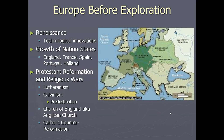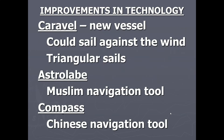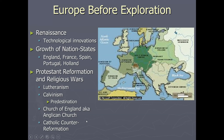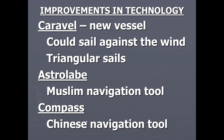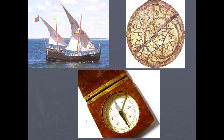Much of this is world history review. The Renaissance introduced technological innovations such as the Caravel — a new vessel that could sail against the wind — along with triangular sails, making it much easier to cross the Atlantic Ocean. The astrolabe was a navigation tool discovered by Muslims, and the Chinese used the compass. In Europe, you also see the growth of England, France, and Spain, and the rise of Protestant religions — Lutheranism, Calvinism, the Church of England created by King Henry VIII — which forced Puritans and Pilgrims out of Great Britain, along with the Catholic Counter-Reformation.